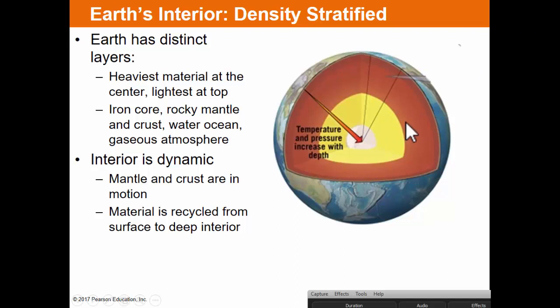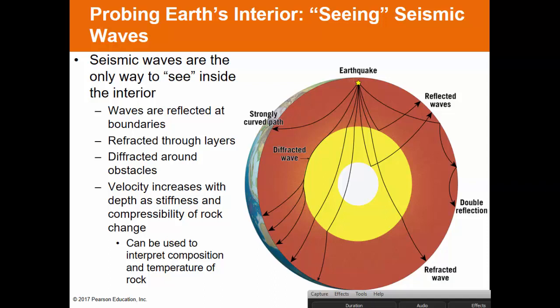Without the liquid outer core, we would not have a magnetic field, and without the magnetic field, we would have no atmosphere. The highest-density material went to the core, intermediate-density material forms the mantle, and the lowest-density material forms the outer crust. The Earth is also dynamic — lithospheric plates dive down, magma plumes rise up, and material is recycled. Even though the mantle is solid rock, it's just hot enough for some plastic movement. Seismic waves allow us to understand the Earth's interior through the way they are reflected, refracted, and diffracted through different layers and materials.